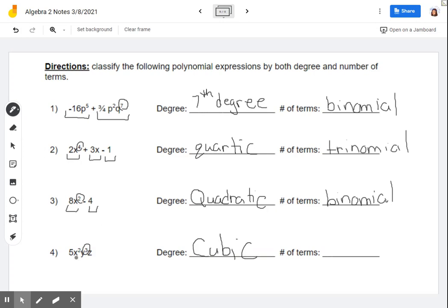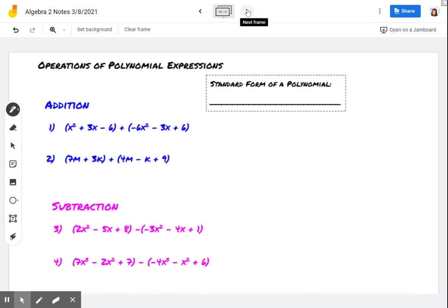And there's nothing being separated by pluses or minus signs here. So even though we have three variables, it doesn't matter. There's no pluses or minuses. So we actually only have one term here. So we can call this a monomial.